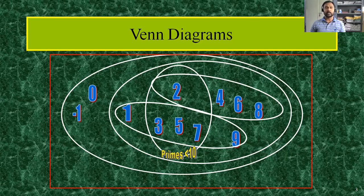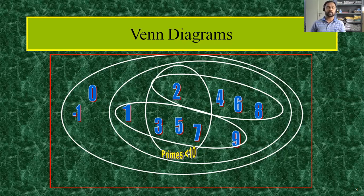But three, five, seven are left out in some sets. So in this way we can easily visualize the sets. The set of primes less than 10 is a subset of the main set because it completely lies inside the big set. So the concept of subsets can also be described using Venn diagrams.